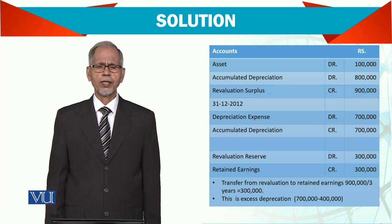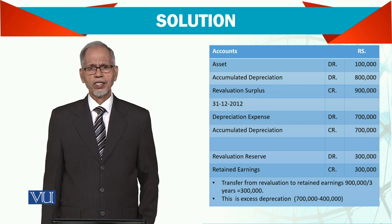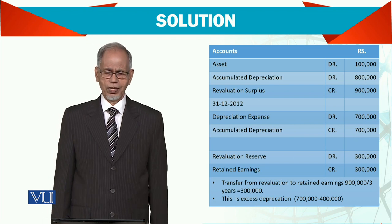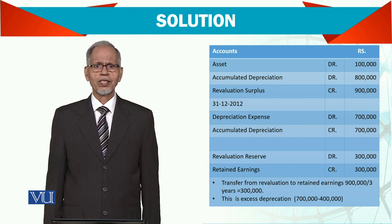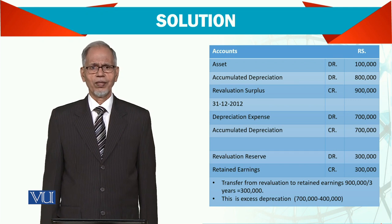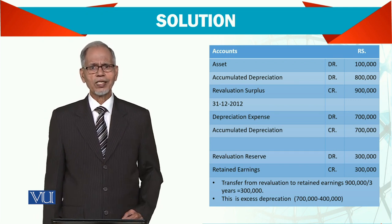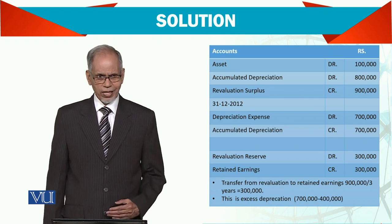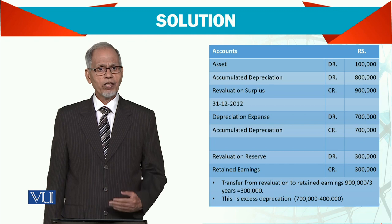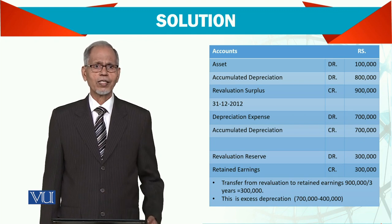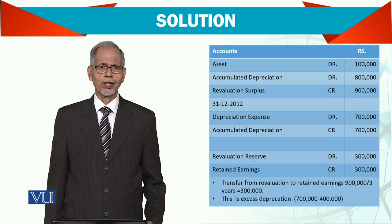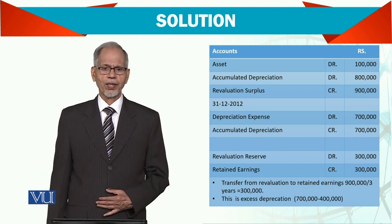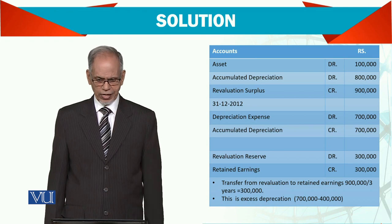There is another important point here. In the first and second years you were charging depreciation of 400,000, but now in the third year you are charging 700,000. This means you are charging 300,000 extra depreciation. This extra depreciation should be taken out from the revaluation reserve, because you charged 700,000 to profit. So we compensate by debiting the revaluation reserve and crediting the retained earnings.